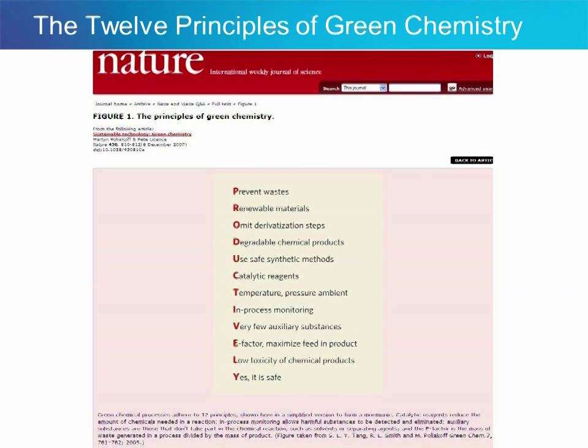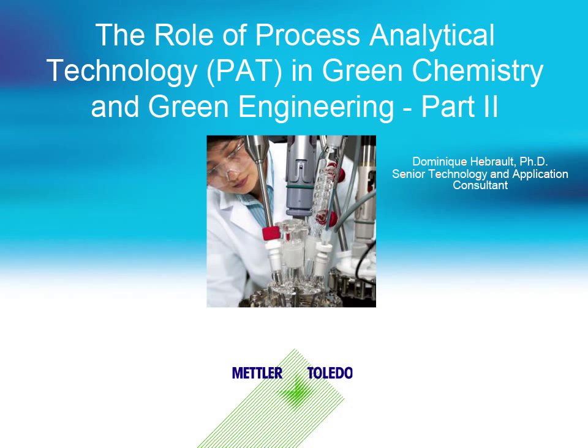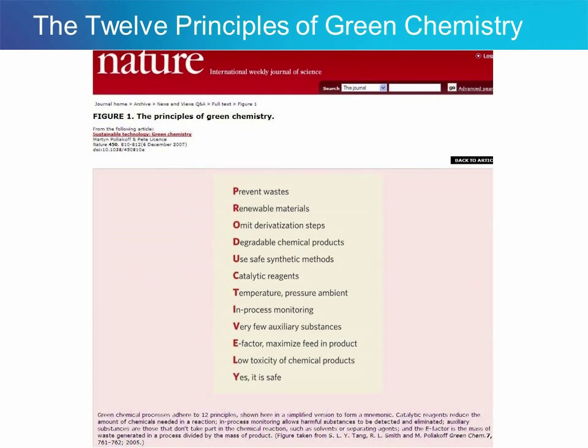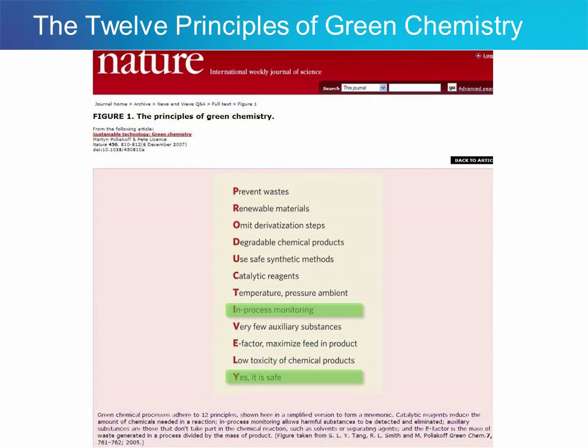If you look at these screenshots of the 12 green chemistry principles, these two are directly linked to the use of instruments like REACT-IR, FBRM and PVM for in-situ real-time process monitoring, as well as to the use of reaction calorimetry — using the RC1, for instance — to make sure a process is safe enough before taking it to a larger scale. This was the topic of part 1 of the same webinar series.